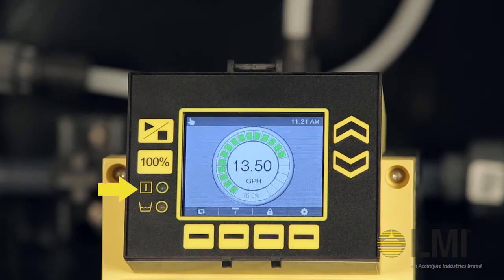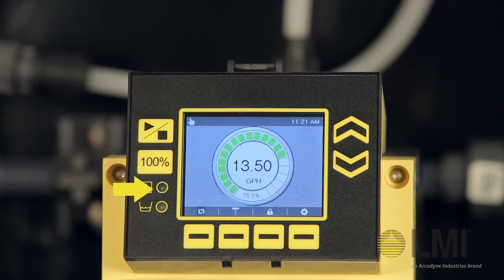Notice the pump status indicator icon and its corresponding LED. If the green LED is illuminated, the pump is operating, and when the LED light is off, the pump is stopped.